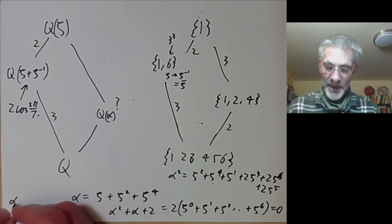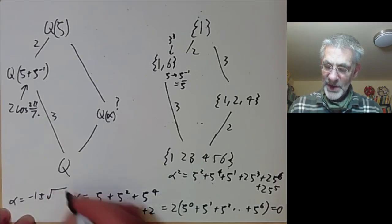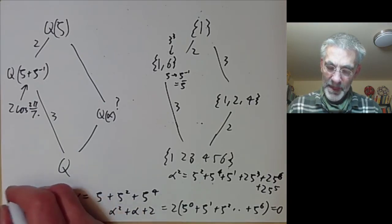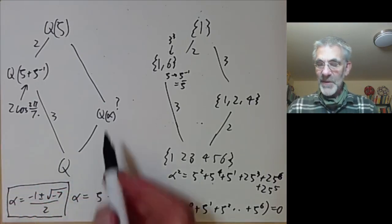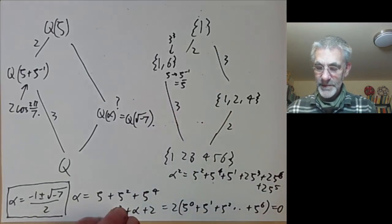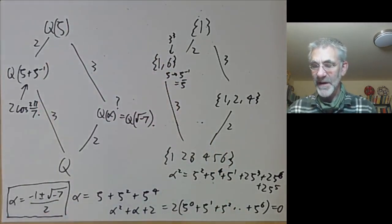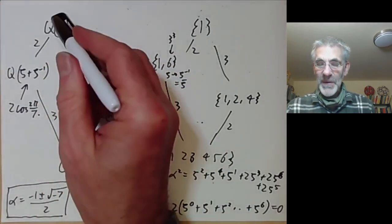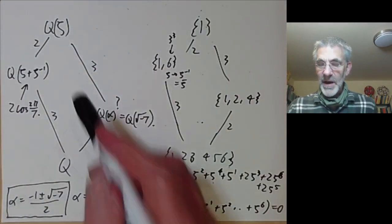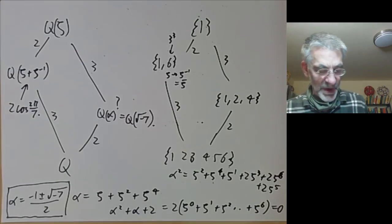So α is a root of α² + α + 2 = 0. Solving by the quadratic formula: α = (−1 ± √(1−8))/2 = (−1 ± √(−7))/2. So the mystery field is Q(√(−7)), a degree-2 extension of Q. The lattice of subfields again mirrors the lattice of subgroups; since the group is abelian, all subgroups are normal and all extensions are normal.